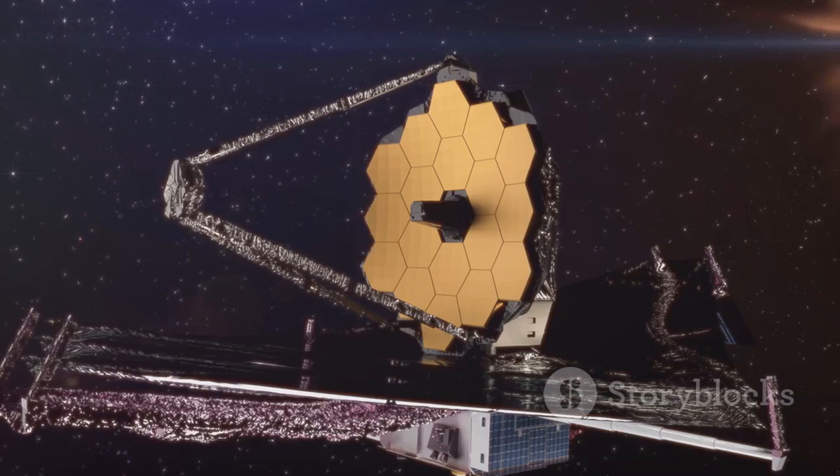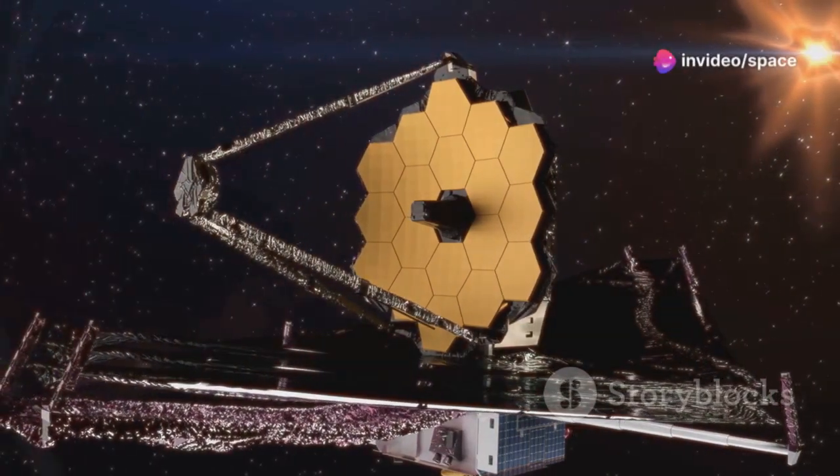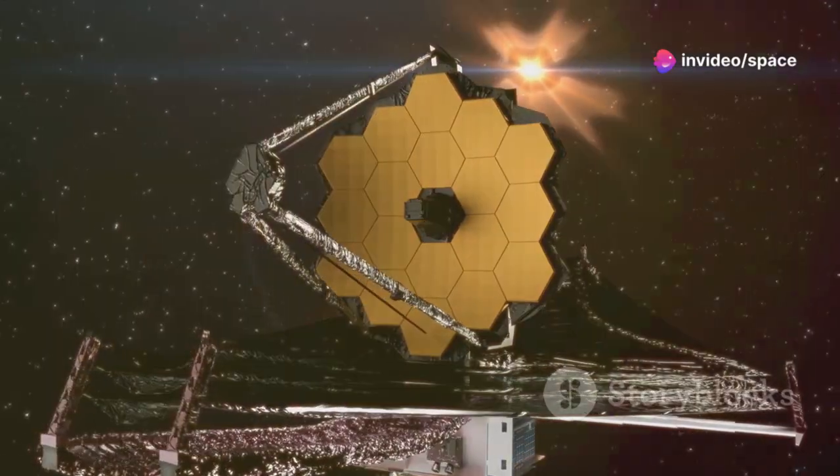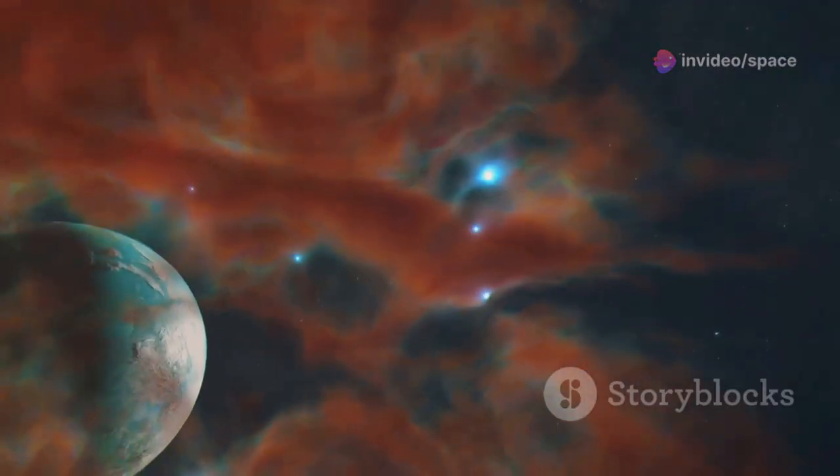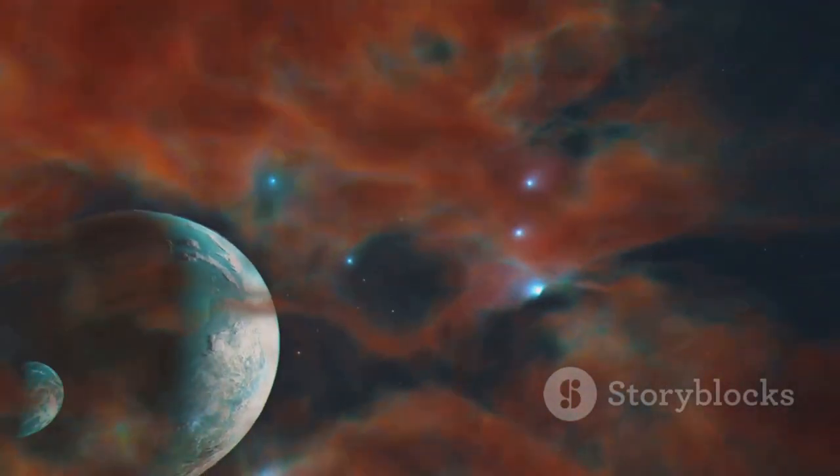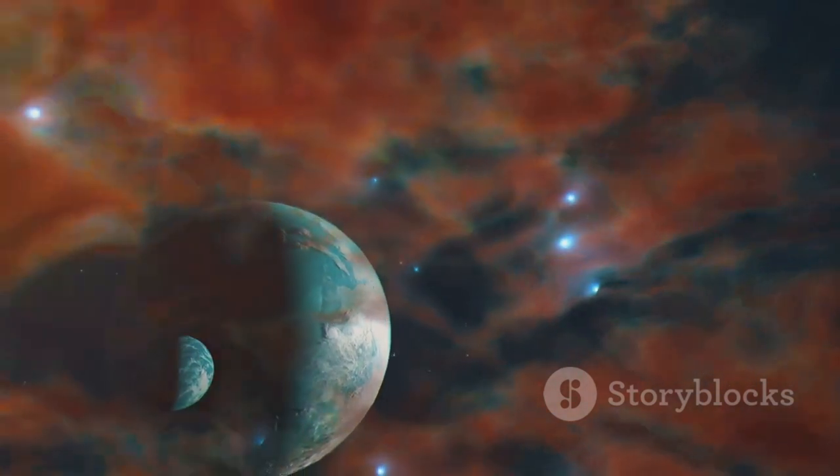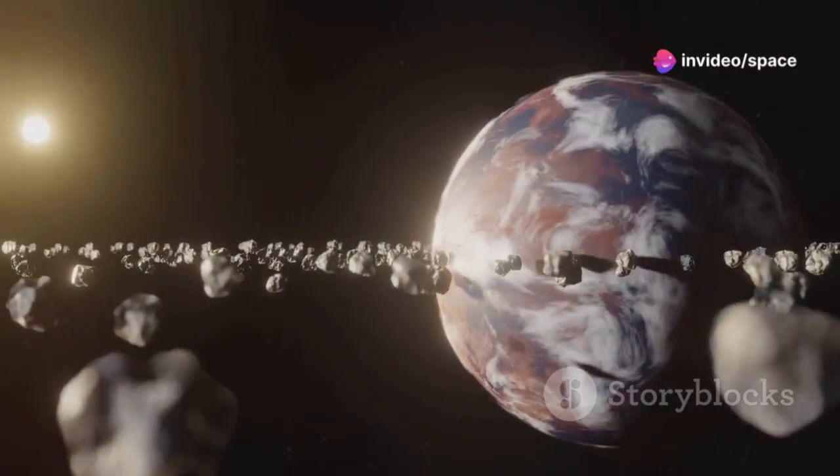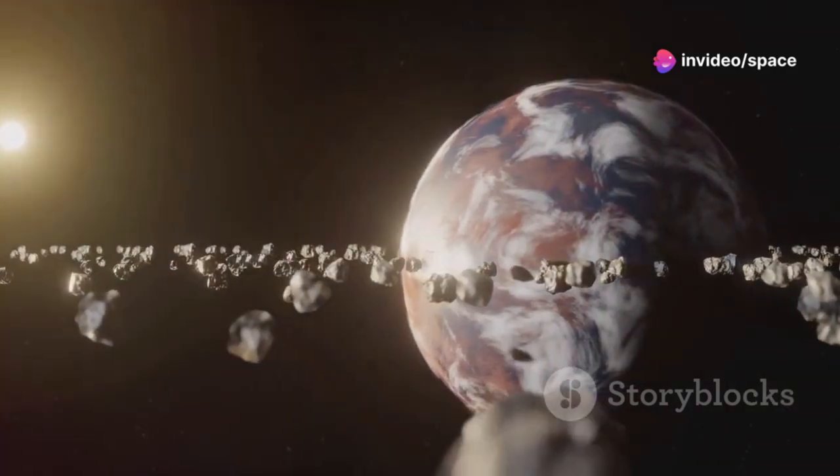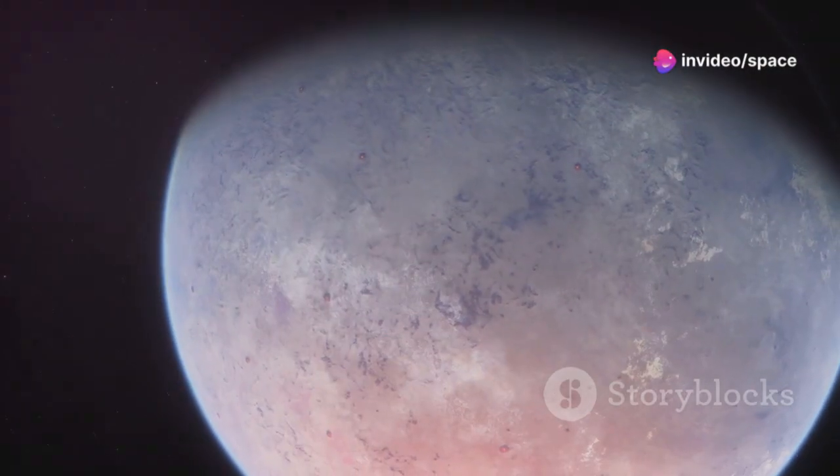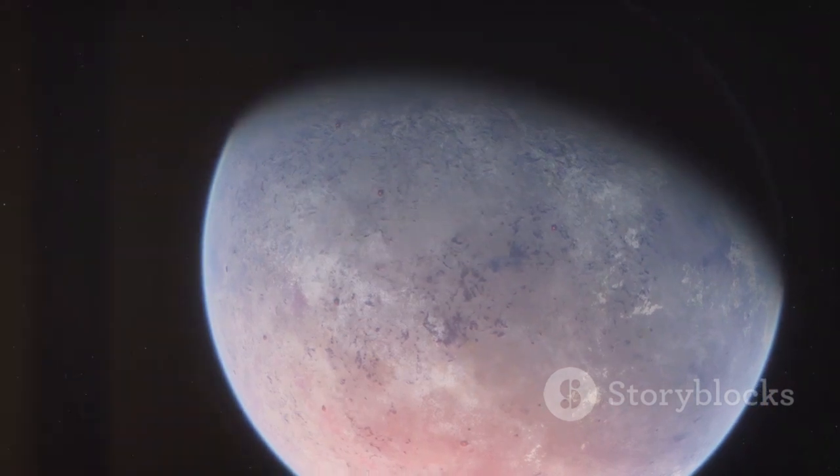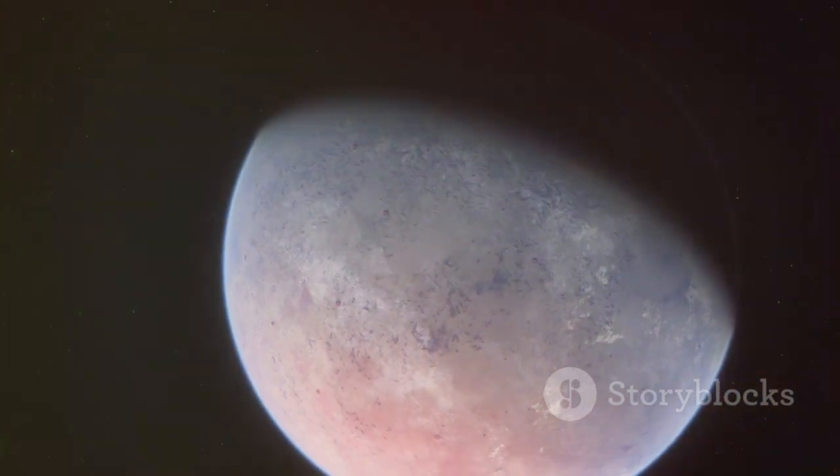JWST's observations of exoplanets are already providing valuable data. Each new discovery adds to our understanding of the universe and our place within it. The telescope has detected water in the atmosphere of a gas giant exoplanet. This finding is significant because water is a key ingredient for life. It has also studied the atmosphere of a rocky exoplanet in the habitable zone of its star. The habitable zone is the region around a star where conditions might be just right for liquid water to exist.